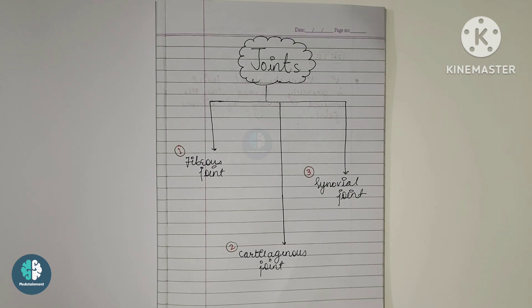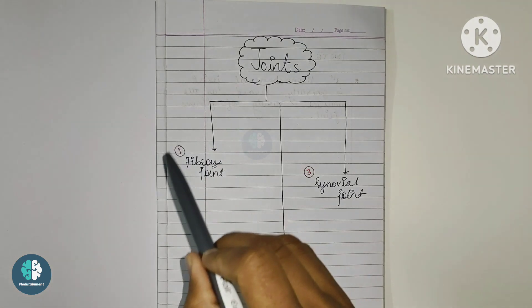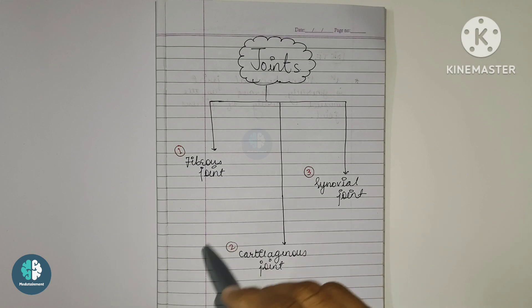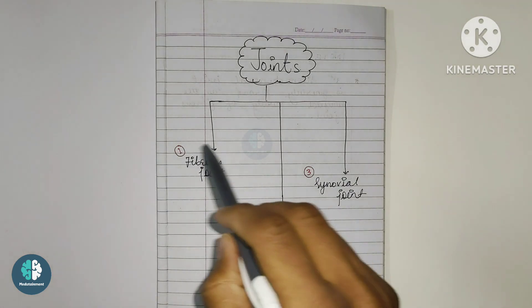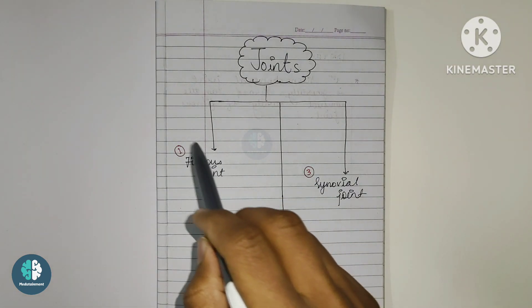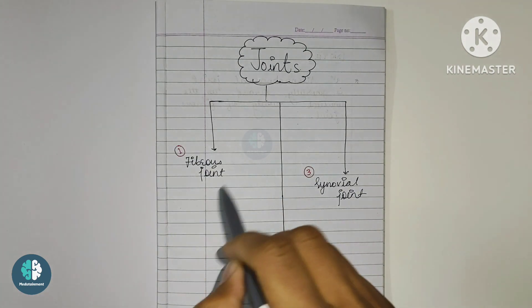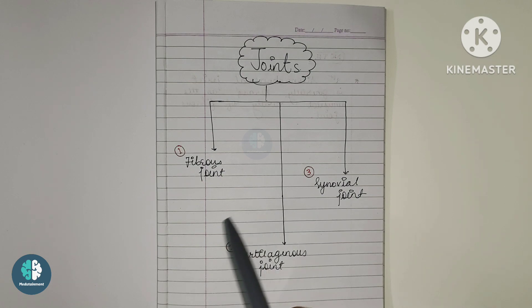Earlier we have seen the fibrous joint classification in another video. But today we are going to talk about the cartilaginous joint. The fibrous joint is completed, so now we will move on to the next joint, that is the cartilaginous joint.